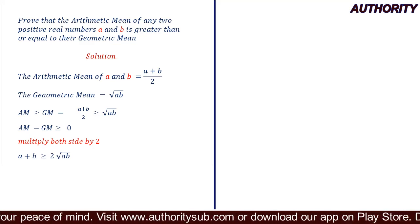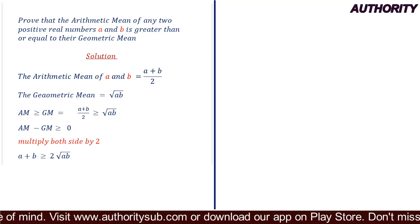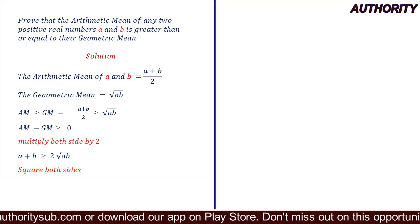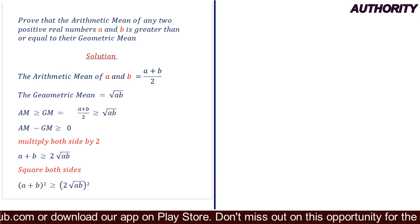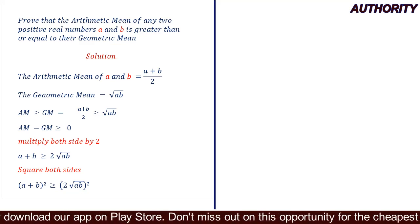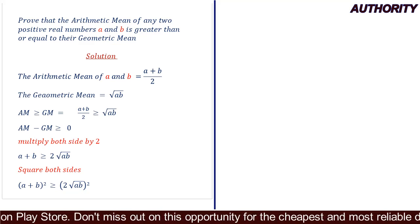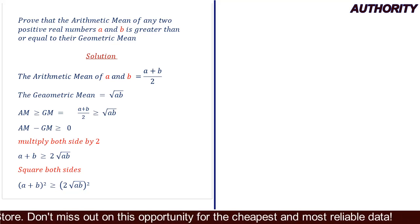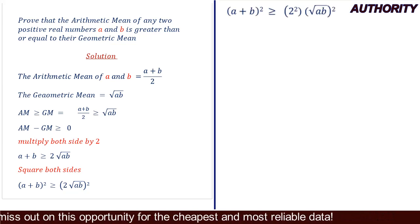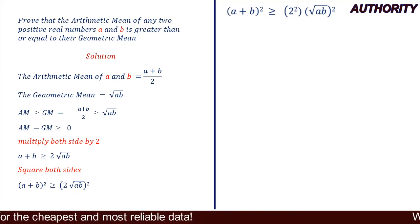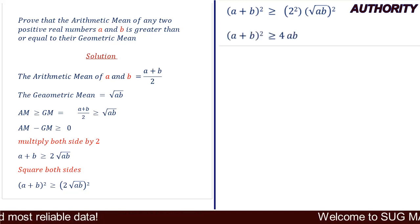Next, we want to remove the square root of ab, so we square both sides. We get (a + b)² ≥ (2√(ab))². On the right-hand side, the square is distributed — 2 squared gives 4, and the square cancels the square root — so we have 4ab.